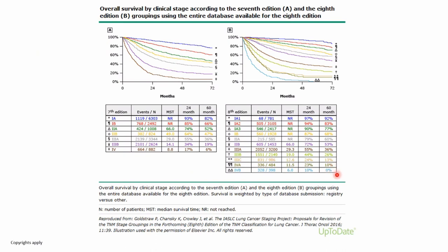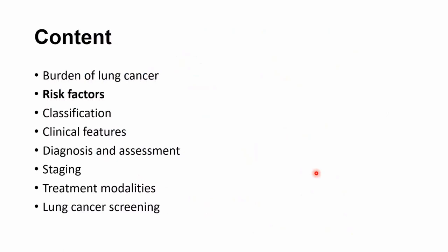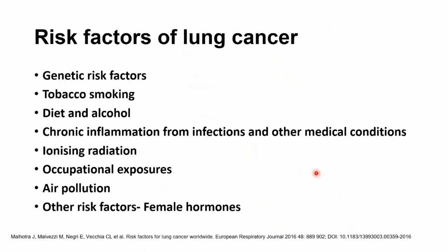Therefore, it is important for early detection of lung cancer to aim for cure. In Malaysia, the majority present at late stage, and the five-year survival rate for advanced stage in Malaysia is 6.3 percent. What are the potential and common risk factors of developing lung cancer? Not just occupational exposure, but there are other important factors — genetic risk factors, tobacco, diet and alcohol, chronic inflammations from infections and other medical conditions, ionizing radiation, occupational exposures and pollution, and other risk factors such as hormonal involvement from female hormones.